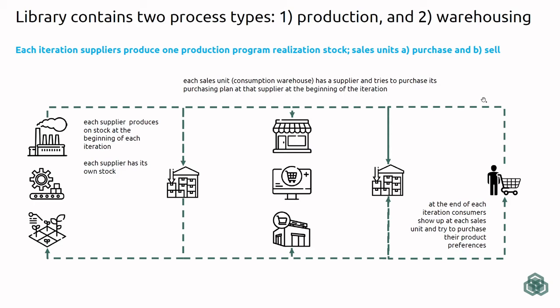Here are the main processes of the simulation library. The main processes are the production process at all of the manufacturers — the suppliers — and the warehousing process at the consumption warehouses. The manufacturers produce on stock iteration after iteration, producing a defined production program onto stock, and they also conduct an inventory check so that all products that have exceeded their expiration date are destroyed from stock.